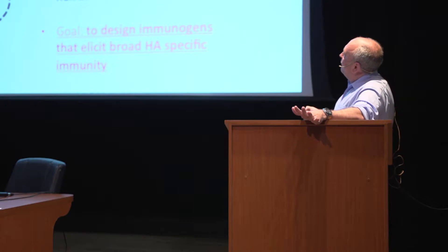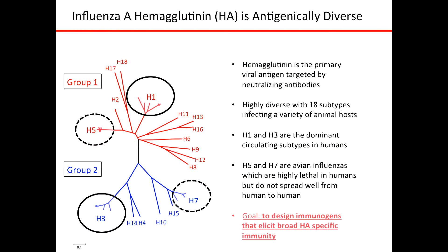Influenza is divided into group 1 and group 2 based on sequence variation. H5 and H1 are group 1; H7 and H3 are group 2 examples. H3 and H1 are currently in circulation — one group 1 and one group 2 — and are components of the annual vaccine. H5 and H7 are avian influenzas that are highly lethal in humans but don't spread from human to human very well.